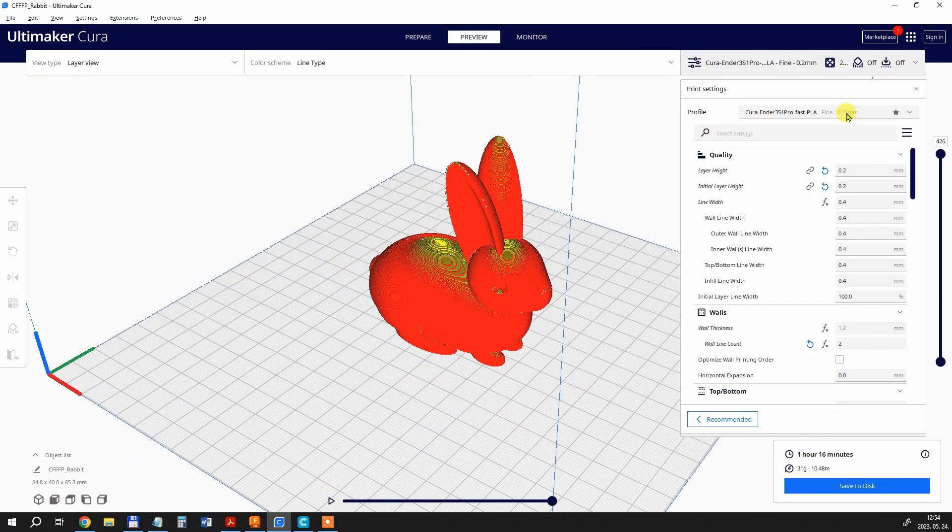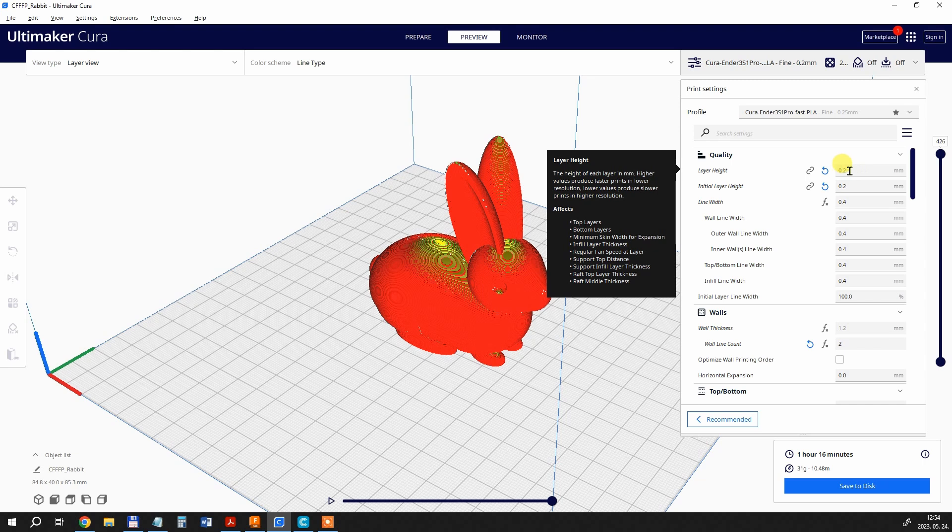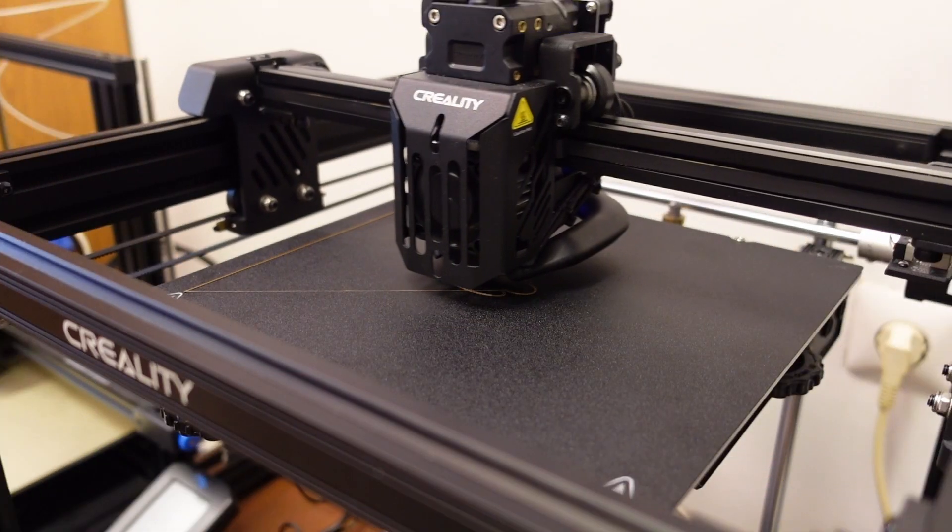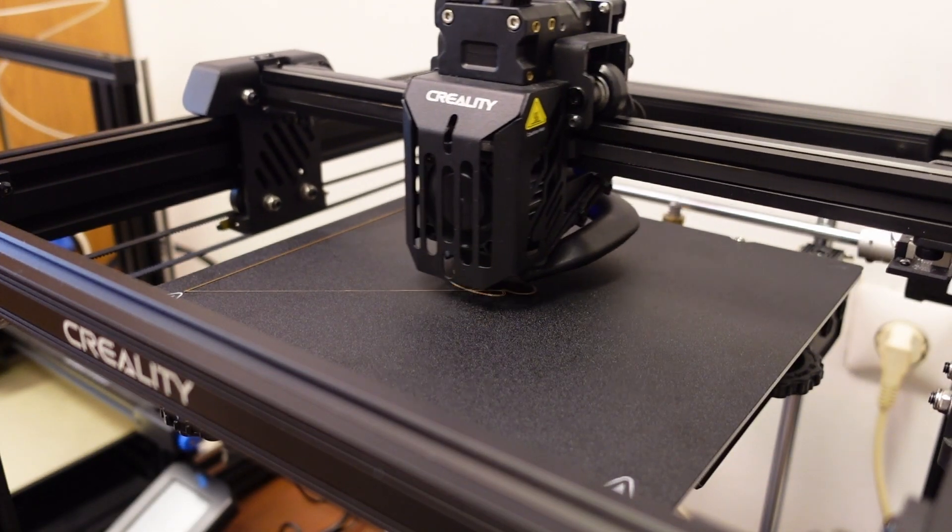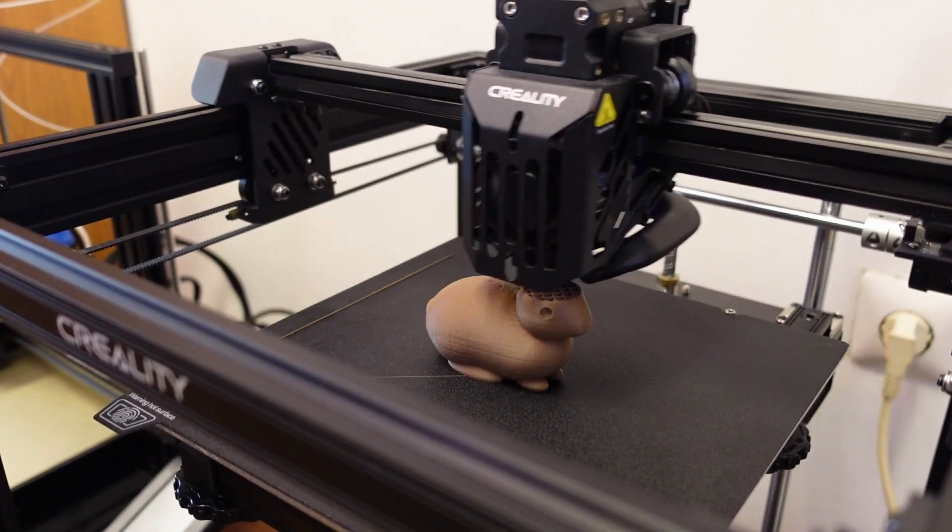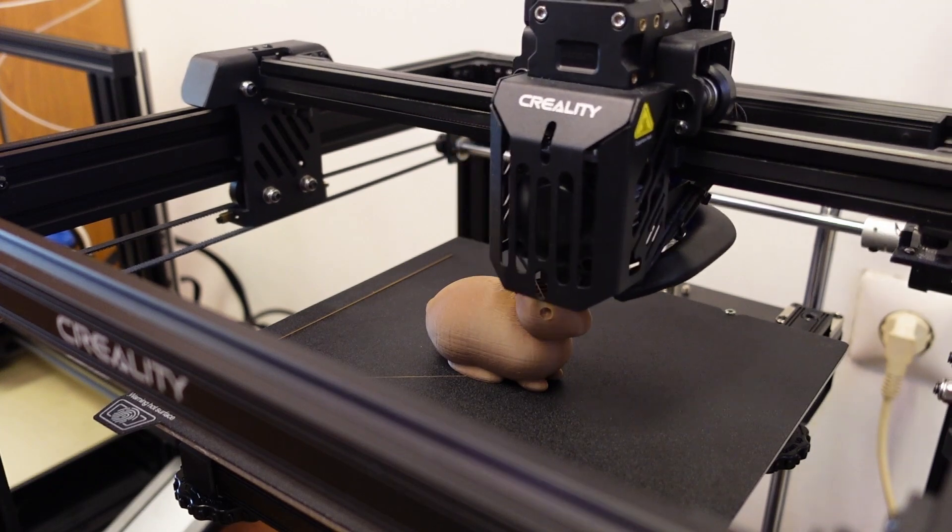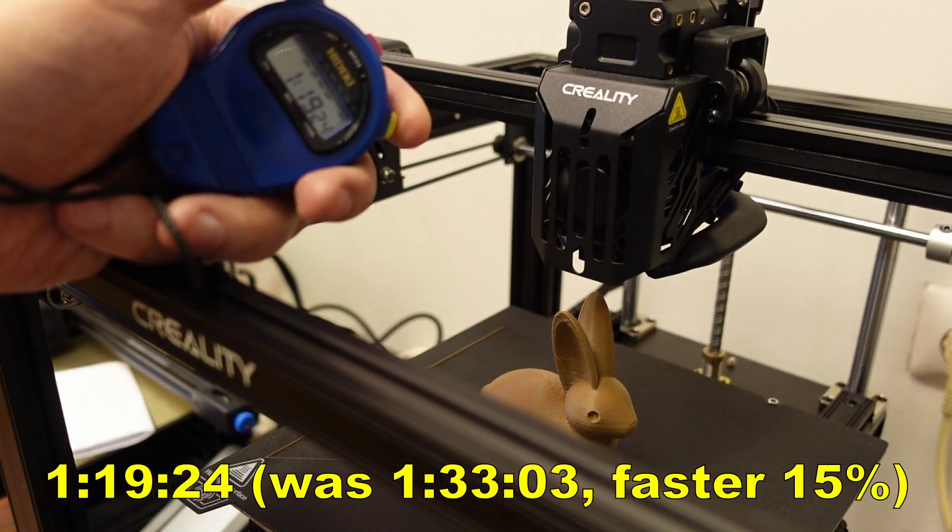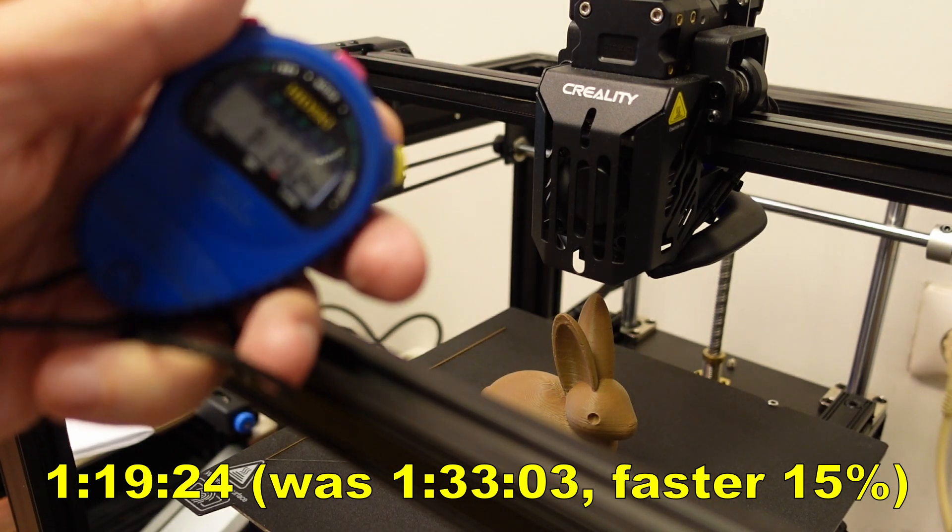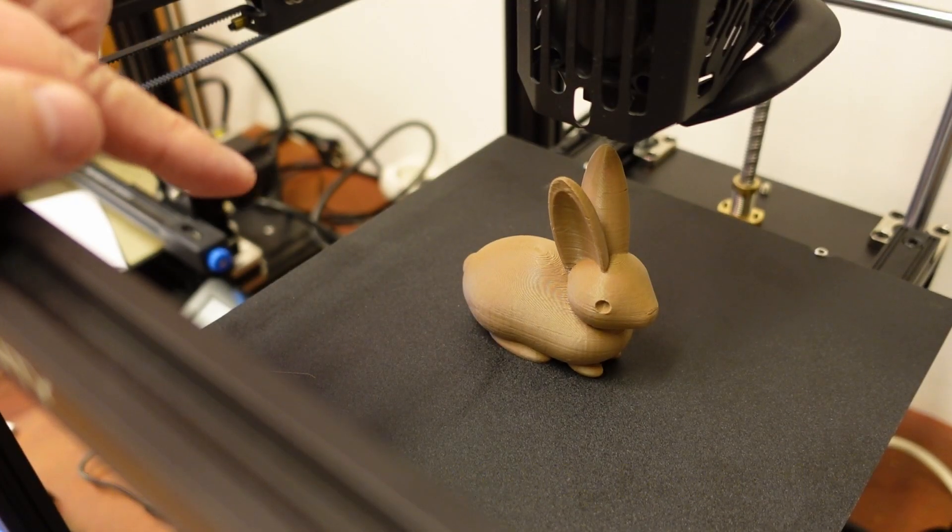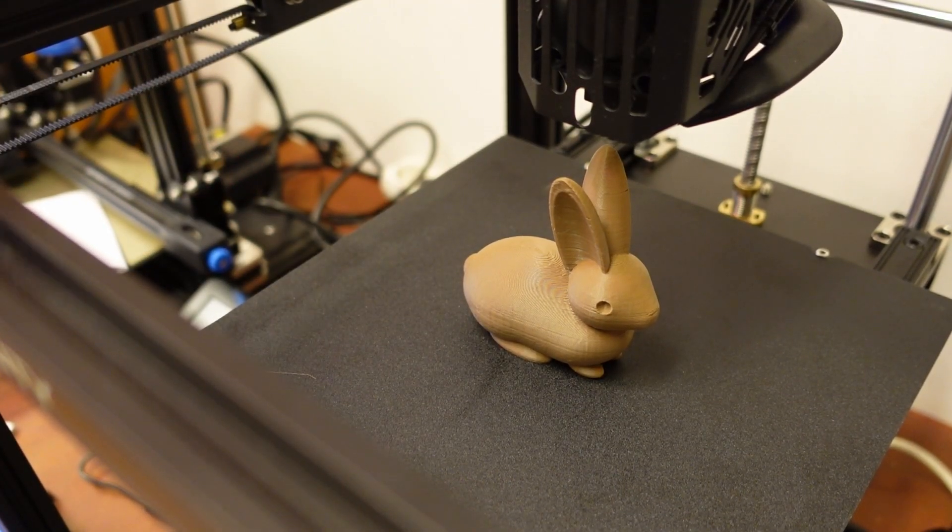So far I used the same G-codes but now I want to prepare a new one with the fast PLA profile which I prepared from the Creality website. I only changed here the layer height to 0.2mm and the infill because I want to have the same settings like with the previous printing. These are again real time footages. The printing time is one hour and 19 minutes. Approximately almost 15 minutes faster.